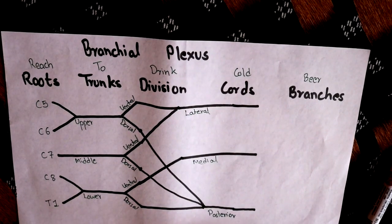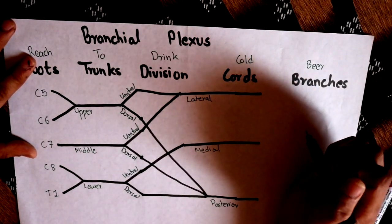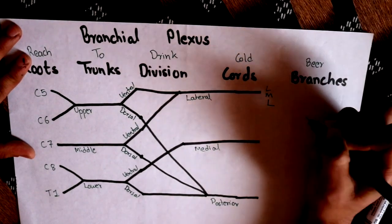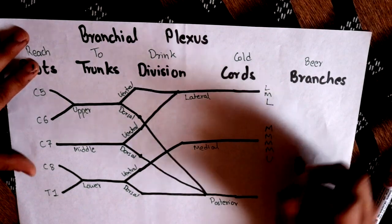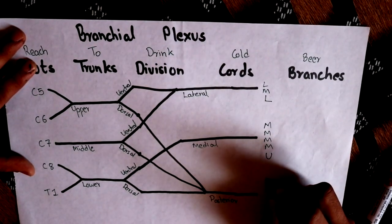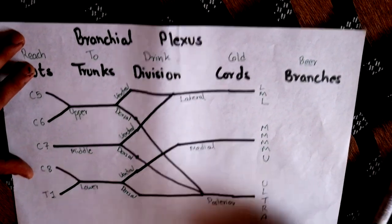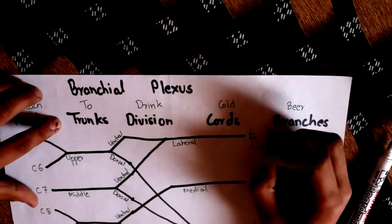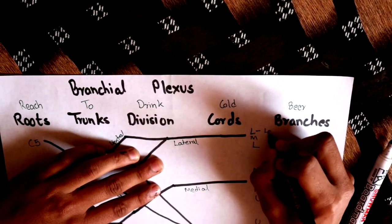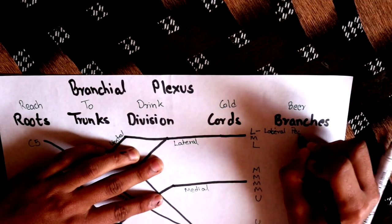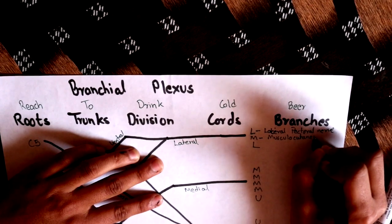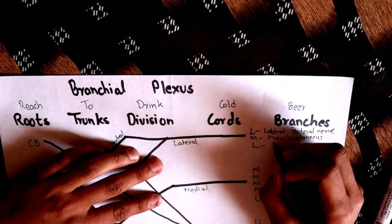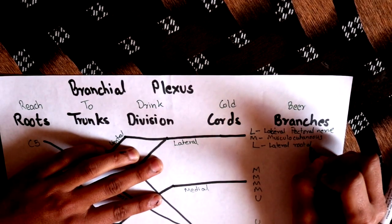Now coming to the branches — there are lots of branches of the brachial plexus and we have mnemonics for most of them. The mnemonic for branches from the lateral cord is 'YAL YUM YAL.' The first YAL represents the lateral pectoral nerve, YUM represents the musculocutaneous nerve, and the second YAL represents the lateral root of the median nerve.